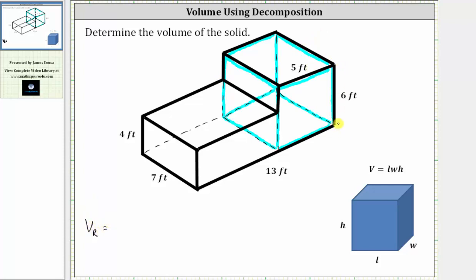The height is six feet, and this edge has a length of five feet. The length of this edge here is the same as this edge down here, which is seven feet. Therefore the box has a length of seven feet, a width of five feet, and a height of six feet. The volume of the box on the right is equal to seven feet times five feet times six feet, which equals 210 cubic feet.